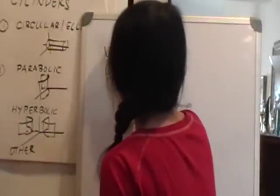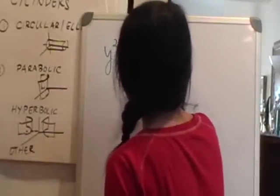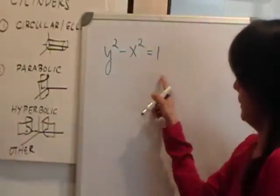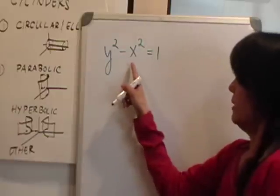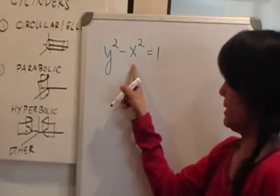Okay, so let's now show an example of a hyperbolic cylinder. So we know this is going to be a hyperbolic cylinder because there's a third variable missing, the z.